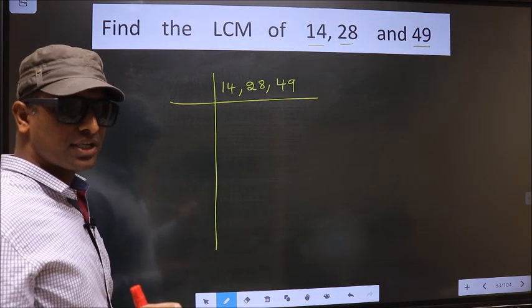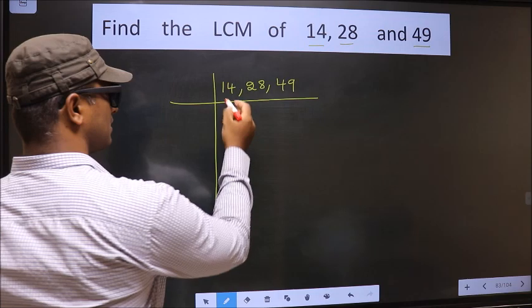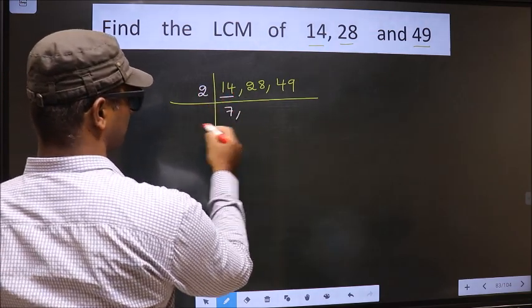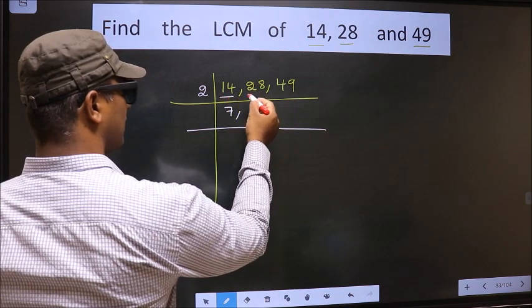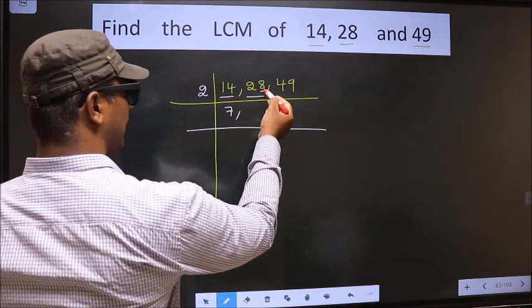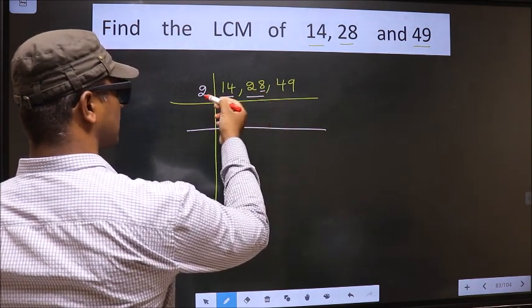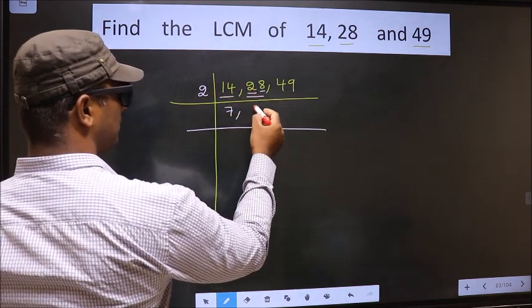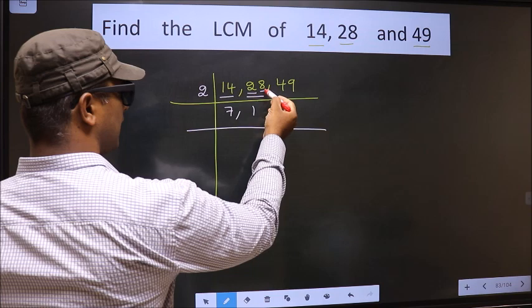Now we should focus on the first number, that is 14. 14 is two sevens. The other number 28, last digit 8, even. So this number is divisible by 2. First number 2, when do we get 2 in 2 table? 2, 1, 2.